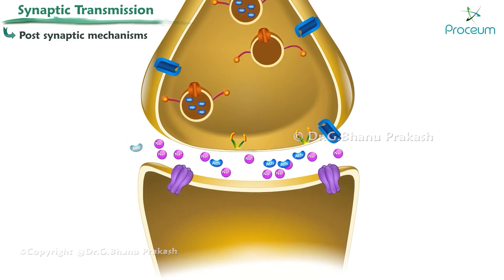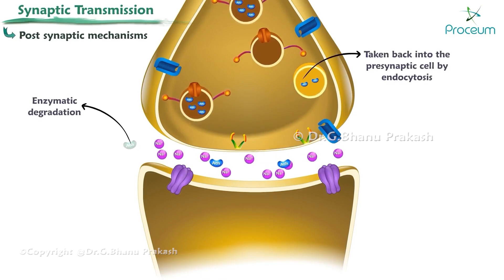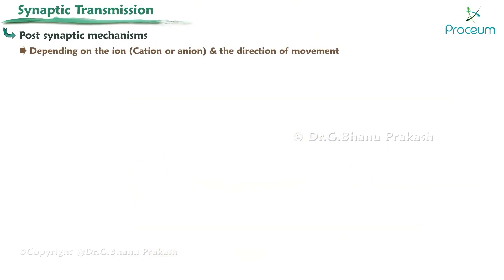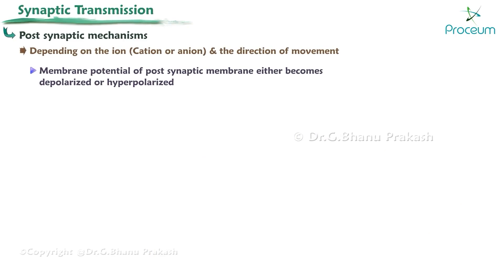After the binding of the neurotransmitter with receptors, the ion channels in the postsynaptic membrane open and movement of ions occurs. Depending on the ion — cation or anion — and the direction of movement, the membrane potential of the postsynaptic membrane changes either towards depolarization or hyperpolarization. This change in membrane potential, also called synaptic potential, creates a signal in the postsynaptic neuron.